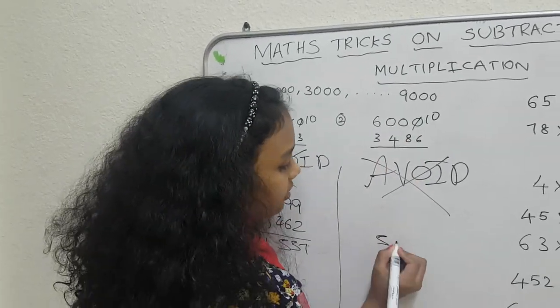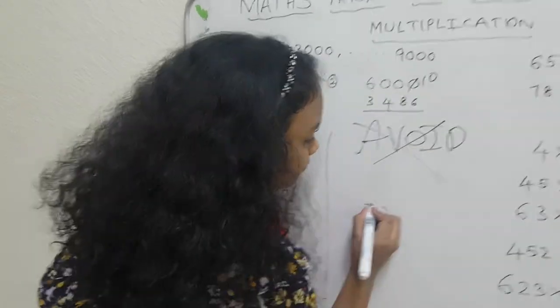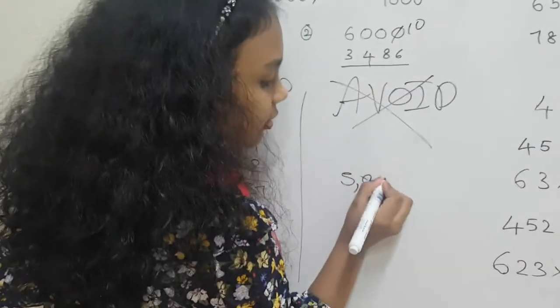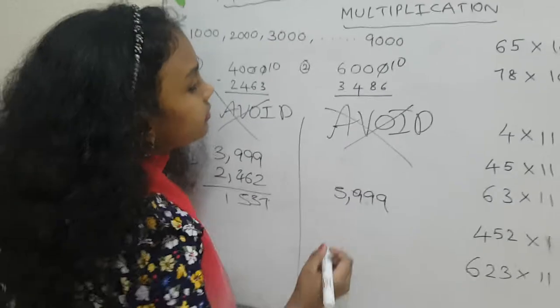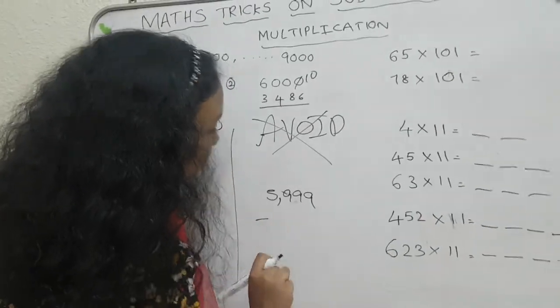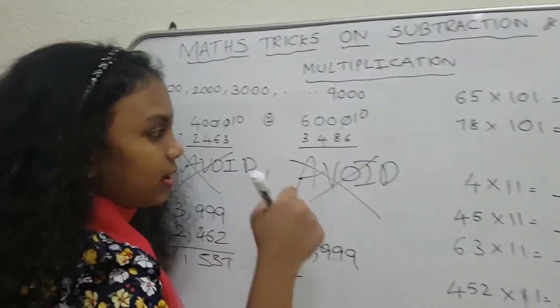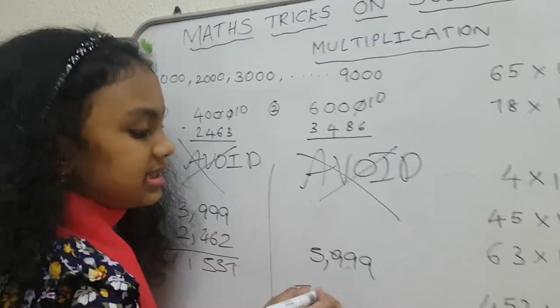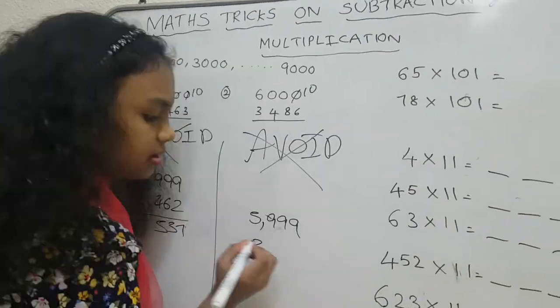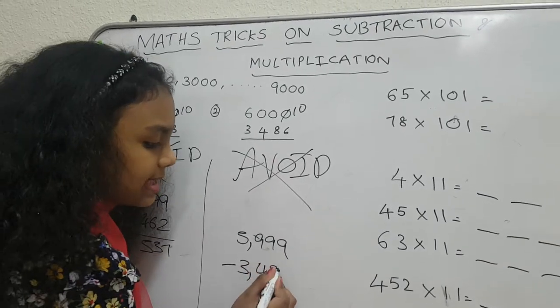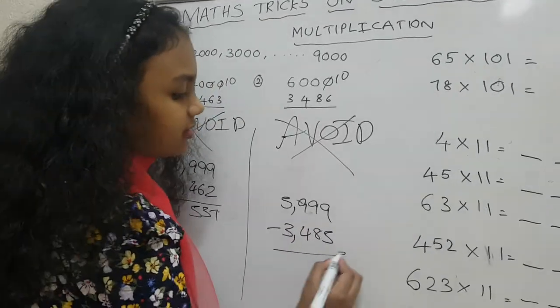6000's before number is 5999. And now, minus 3486. 3486's before number is 3485. So let's do the minus.